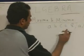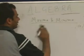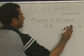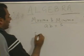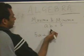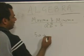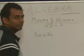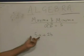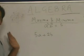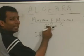Now if a cubed times b squared is equal to 5, and we need to find the minimum value of 5a plus 2b, we follow the same method. We need to find the minimum value of 5a plus 2b, where the power of a is 3.